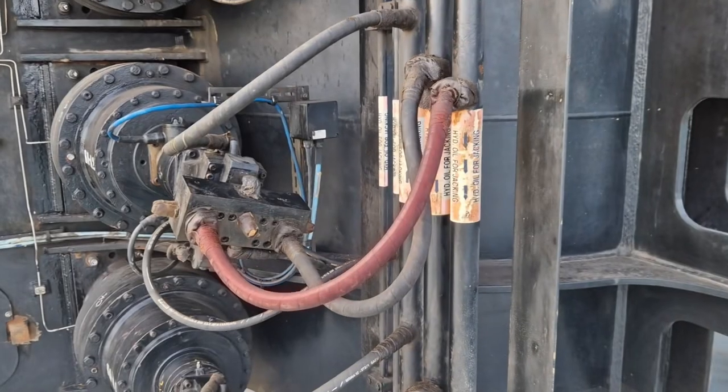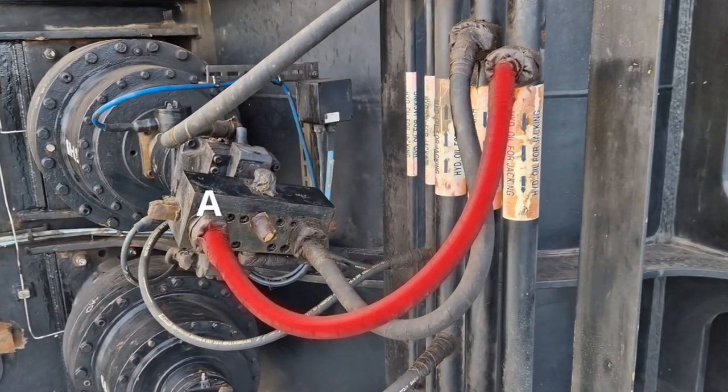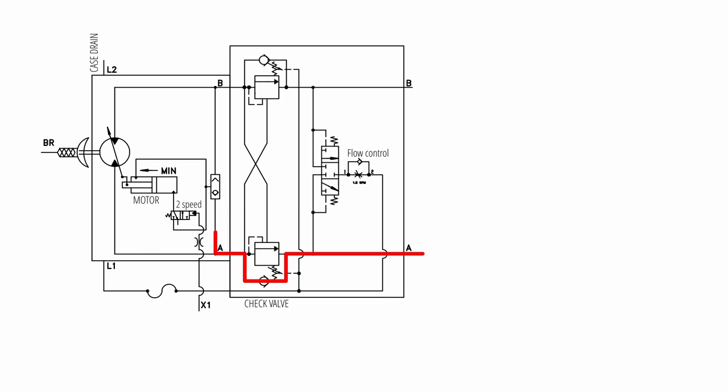The high pressure in line A will bypass the counterbalance valve and pass through the check valve. It will carry on through the system to power the motor.